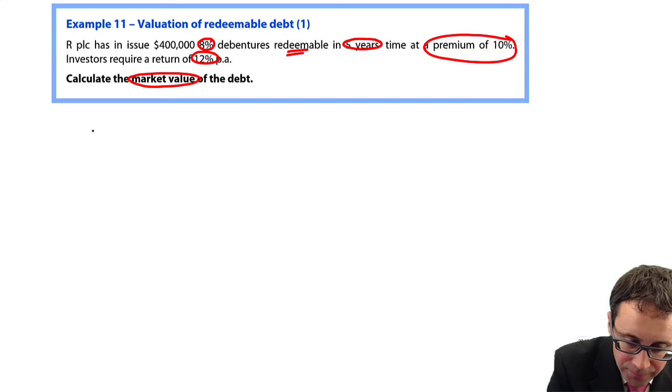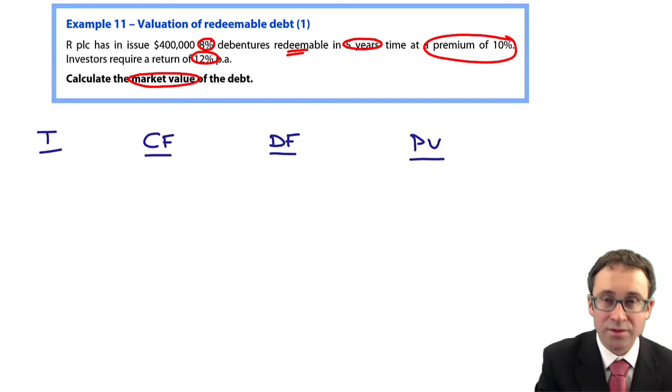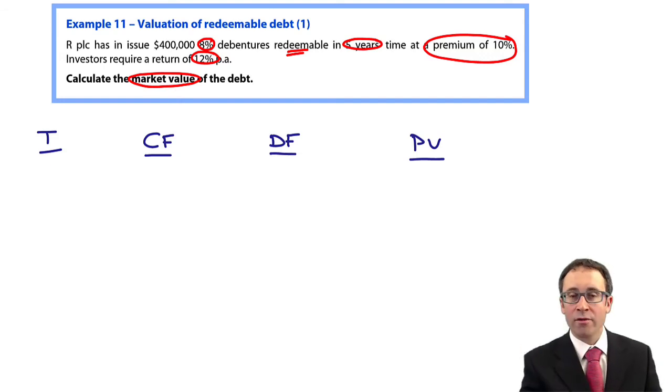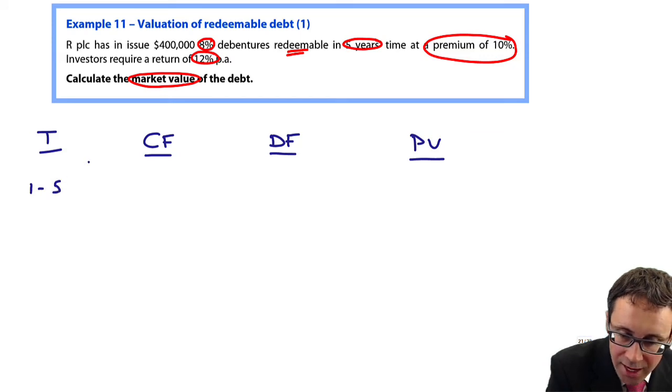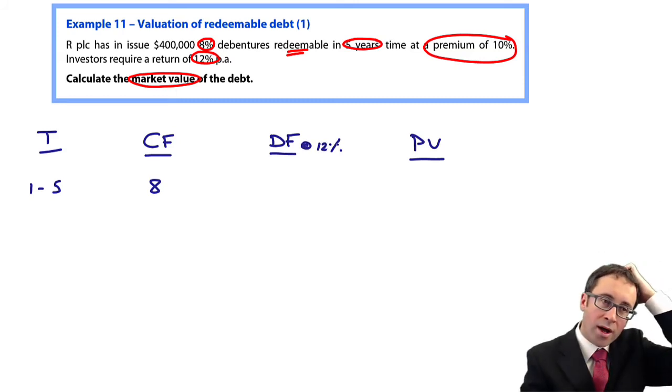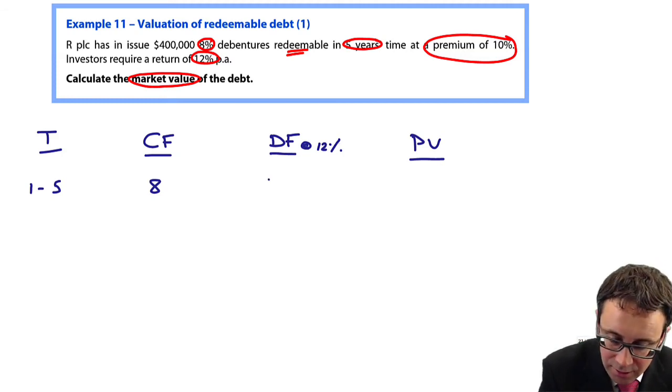What I'll do is look at my cash flows, then my discount factor. Let me add an extra column to make sure you're happy. You've got your time period, cash flows, discount factor, present value. You can do it in a much shorter hand method, but let's do it and make sure we get it right first. We've got time period T1 to 5, your cash flows. There's 8. The discount factor is based on a rate of 12%.